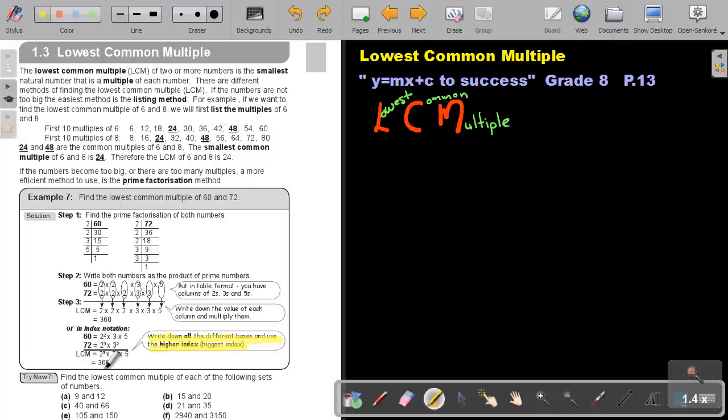I want you to pause the video and I want you to do for me number E. And then you can continue with the video. Okay, let's do number E. So take 105 and take 150 and break it up into the product of prime factors.